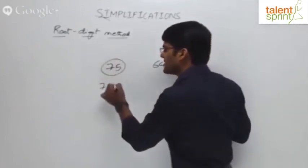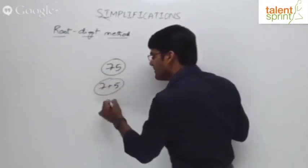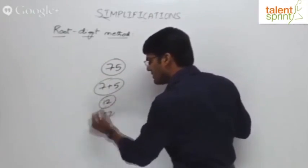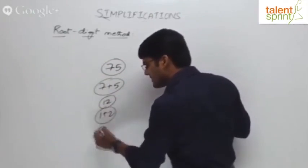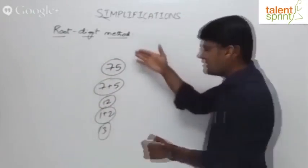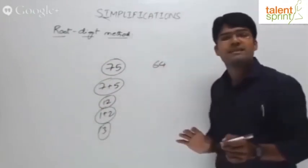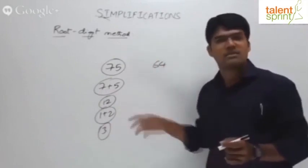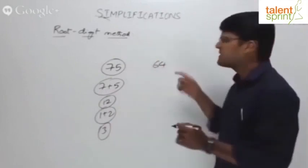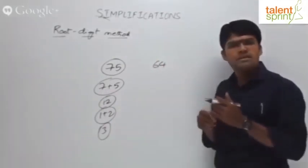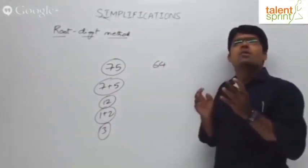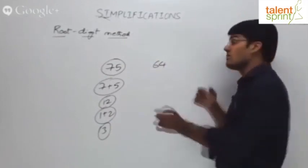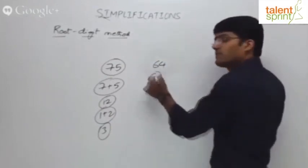For 75: 7 plus 5 gives 12, then 1 plus 2 gives 3. You keep doing this until you get a single digit. Likewise, for 64: 6 plus 4 is 10, then 1 plus 0 is 1. The root-digit of 64 is 1.